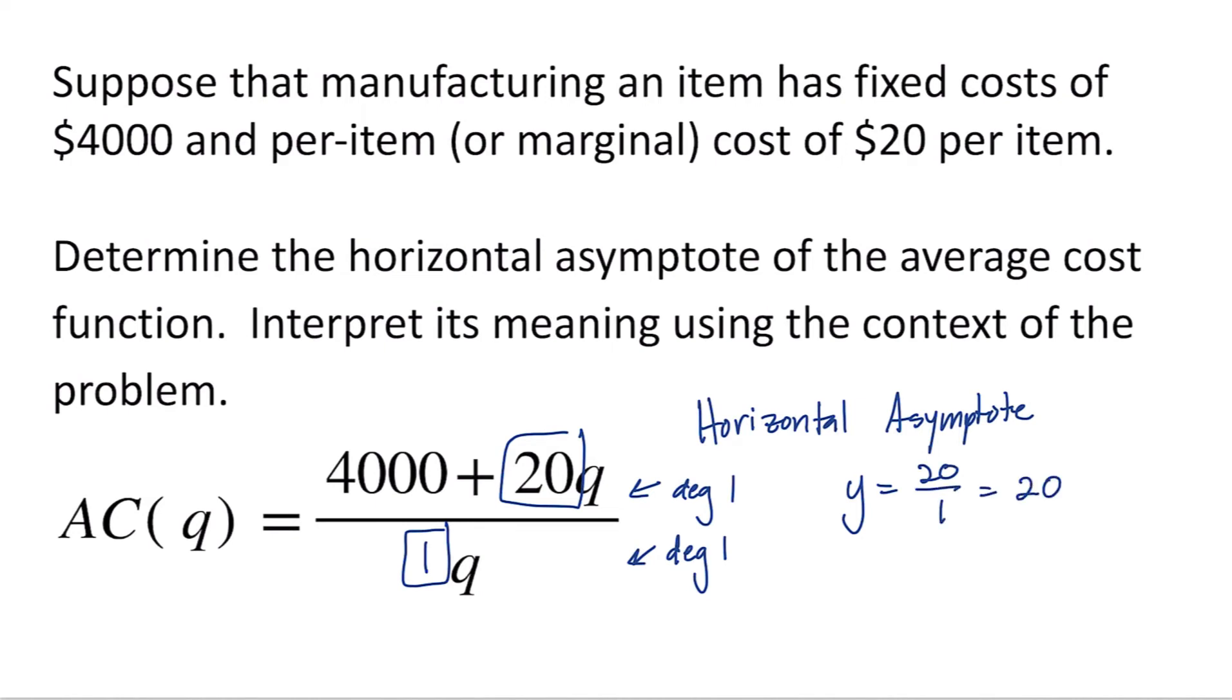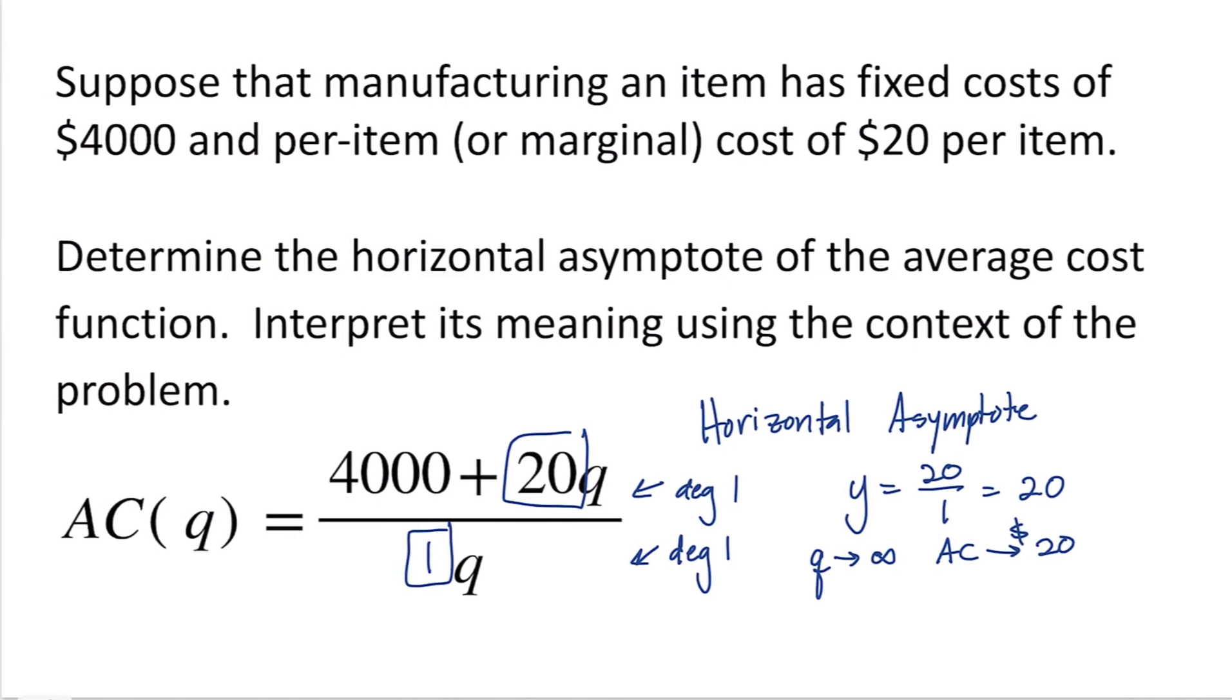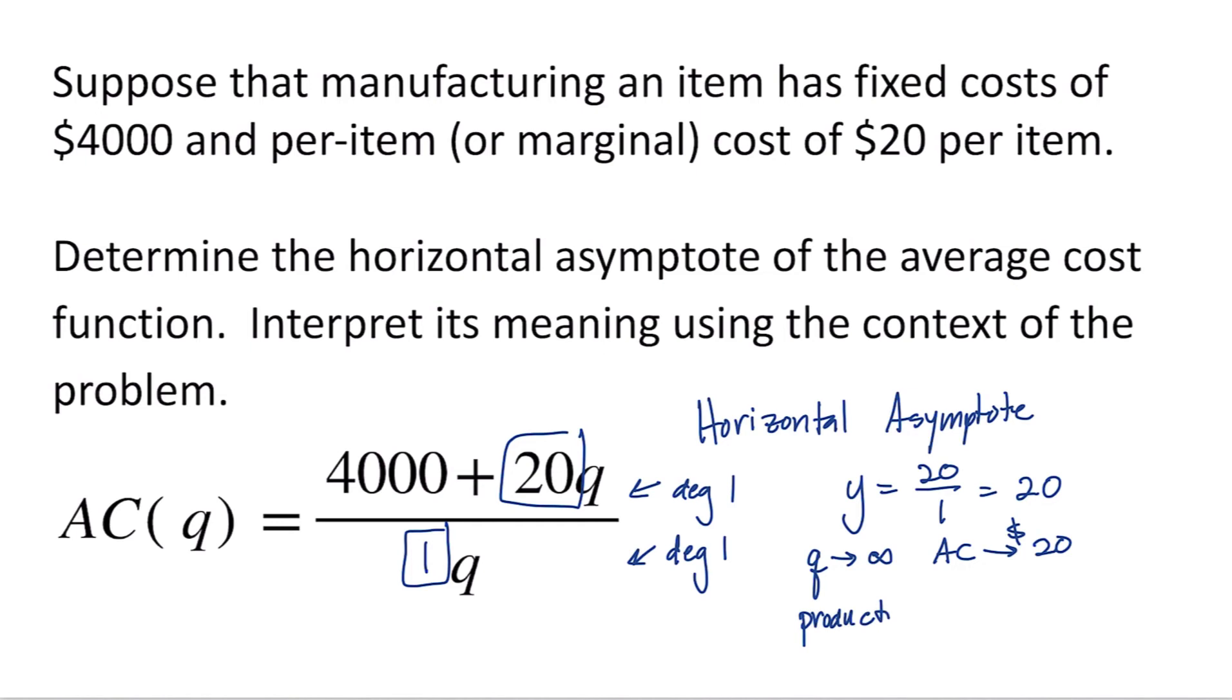So essentially, this means that as Q goes to infinity, our average cost is trending toward $20. As Q goes to infinity, that means that as our production increases, the average cost trends to $20 per item.